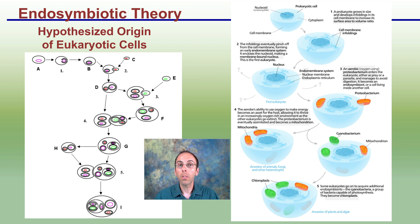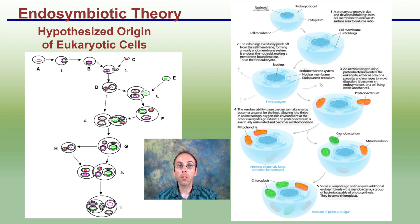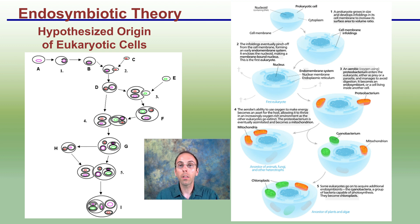The theory behind how they became incorporated into the cell — looking first at the mitochondria — is where this aerobic, oxygen-using protobacterium enters the eukaryotic cell. It could be either as a prey item or a parasite, and it manages to avoid digestion or being broken down. Exactly how it avoids that is not really sure; there are other theories regarding that, but it's taken into the cell and is not broken down.